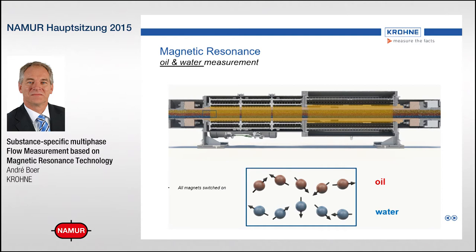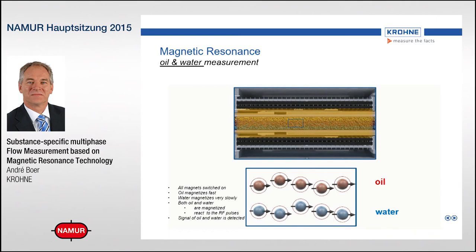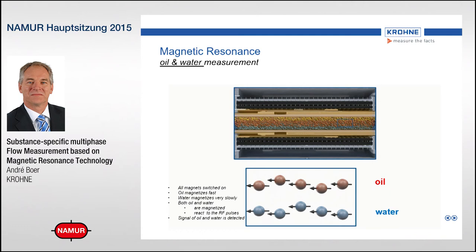In the next measurement phase, we switch on more magnets, so the magnetization time is much longer, giving the water protons the possibility to align as well. Once exposed to high-frequency waves, they also send signals back. So when we do the measurement now, we get signals back from both the oil protons and the water protons — measuring the velocity of both, whereas in the first measurement we were only measuring the velocity of the oil.